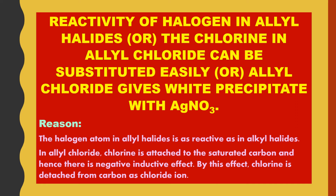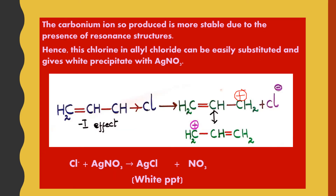The structure of allyl chloride is CH2=CH-CH2Cl. Chlorine in allyl chloride is attached to a saturated carbon atom. Because of the negative inductive effect, a carbonium ion is produced — chlorine leaves easily as a chloride ion, and a positive charge forms on the carbon to which chlorine was attached. After the arrow we have CH2=CH-CH2⁺, which we call a carbonium ion.